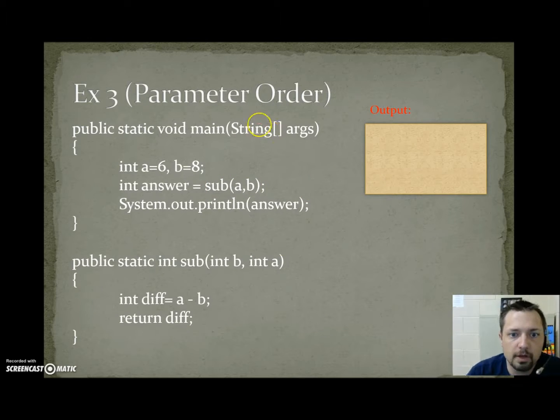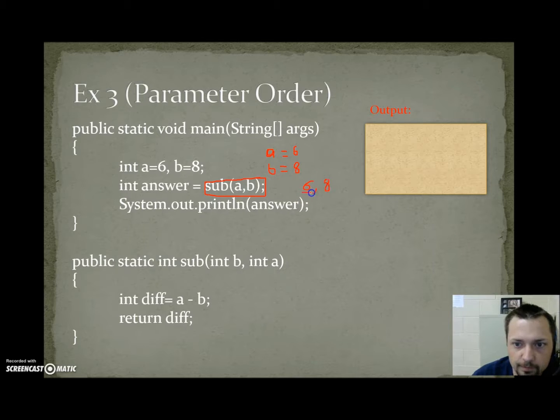So parameter order. We're going to do the same example again with a slight difference. So first off, I'm going to write a equals 6. I'm going to write b equals 8. And then I'm going to call sub a comma b. So when I call a comma b, I'm trying to send a b, but what I'm really sending is 6 comma 8, like we always do. And then I send 6, and it gets stored into the first parameter.